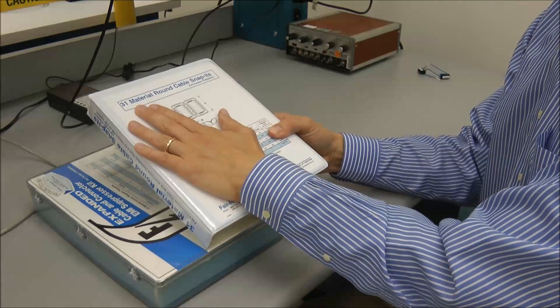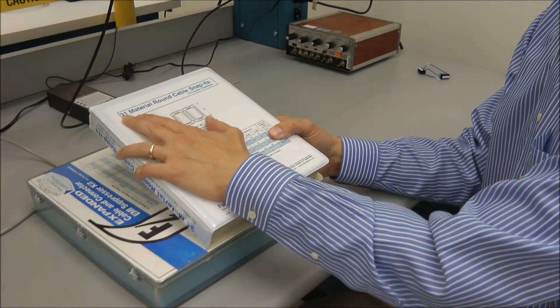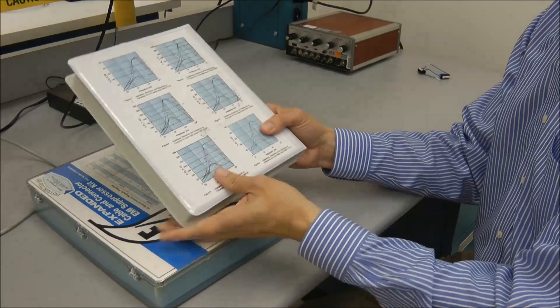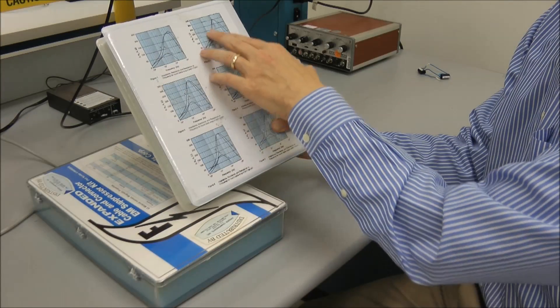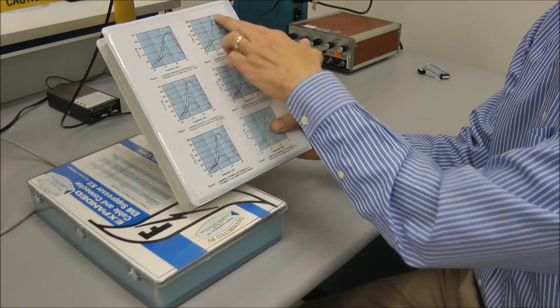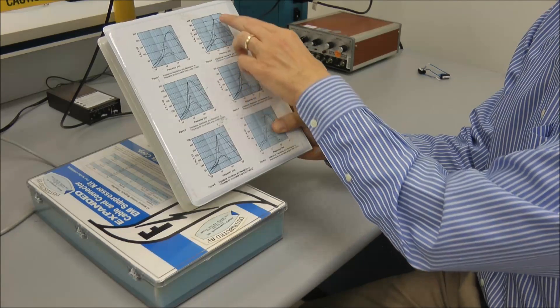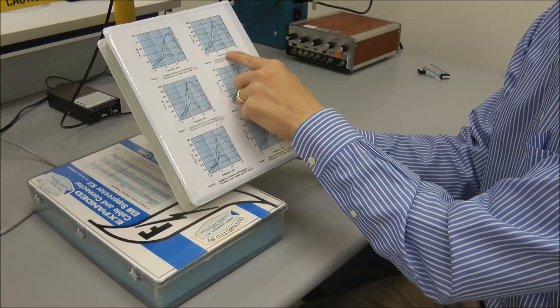They're also out of different kinds of material. So this particular one is out of a 31 material. And what that does is the material and the size affect how well it behaves across frequencies. So in the case of this plot, it shows that the maximum performance, the maximum loss of that ferrite, is provided somewhere around 100 MHz.